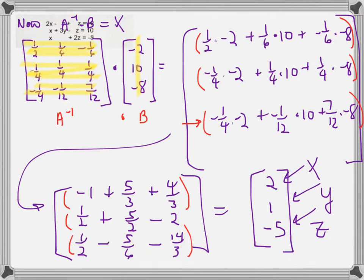There are easier methods like Gaussian or Gauss-Jordan elimination, but the inverse matrix method is especially nice for calculators — you can enter A and B into the calculator and simply compute A inverse times B to get the answer matrix directly.